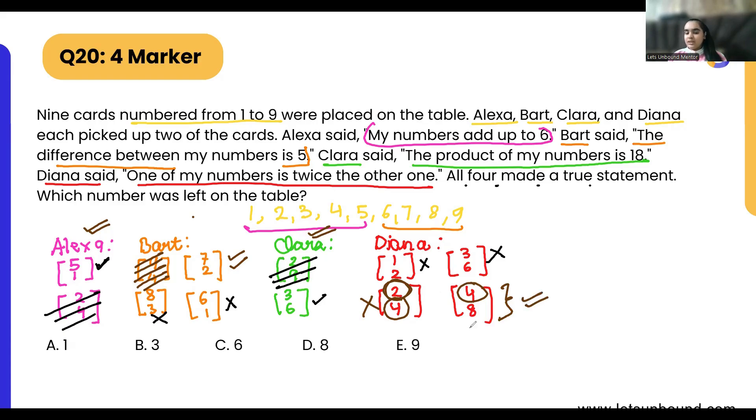Now from here we can see that Diana will have number four and eight. So we are done with our question. We got the answer. Alexa is going to have one and five. Bart is going to have seven and two. Clara is going to have three and six. And Diana is going to have four and eight. That left us with the number nine that none of the people have used. So that means the number that was left on the table is number nine. Option E is the correct answer.